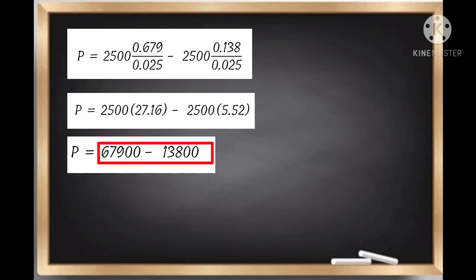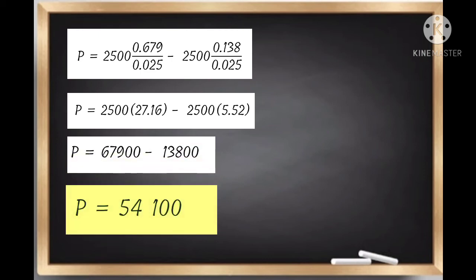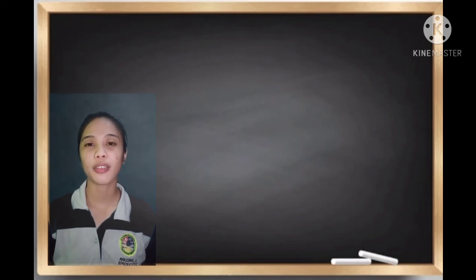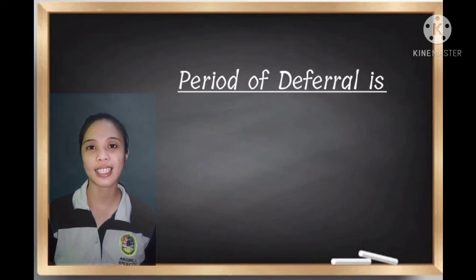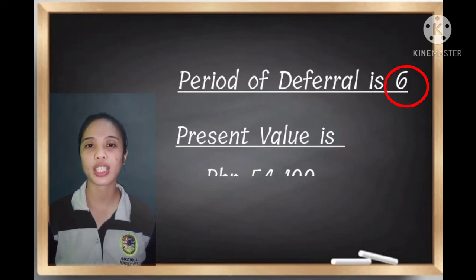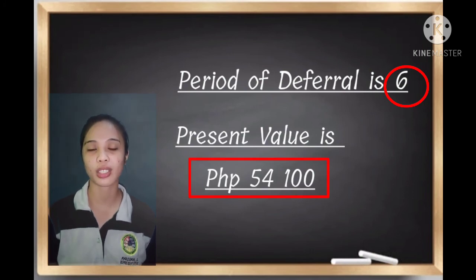Subtract 67,900 and 13,800, we get the present value of 54,100. Therefore, the period of deferral is 6 and the present value is 54,100 pesos.